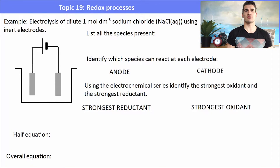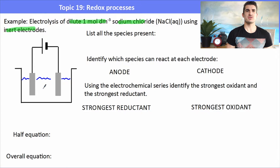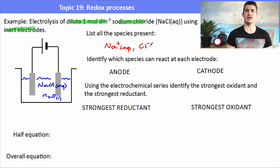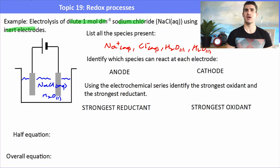Here is an example: electrolysis of dilute 1 molar sodium chloride (NaCl aqueous) using inert electrodes — meaning the electrodes won't react. We identify all species present: sodium ions, chloride ions, and water. We write water twice because water could react at both the anode and the cathode, so we always write water twice every time we electrolyze an aqueous solution.